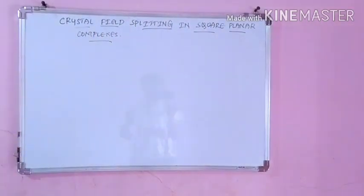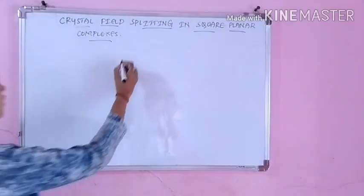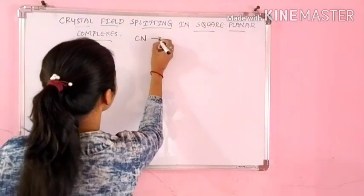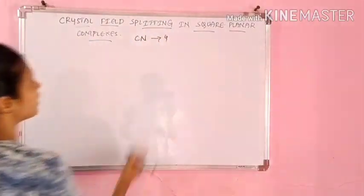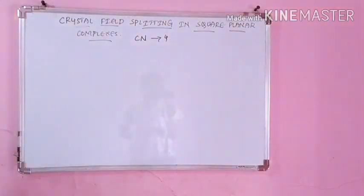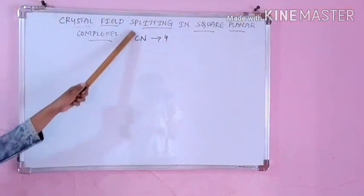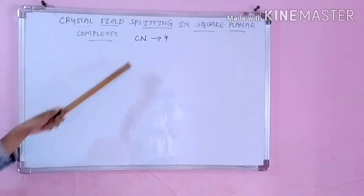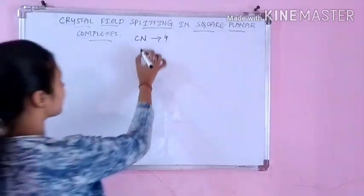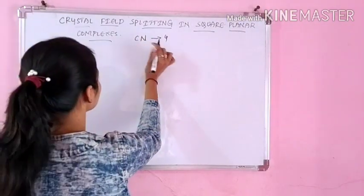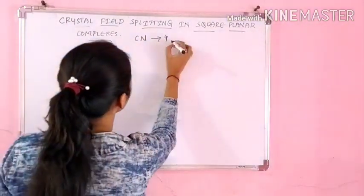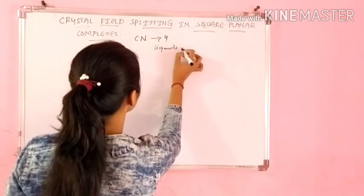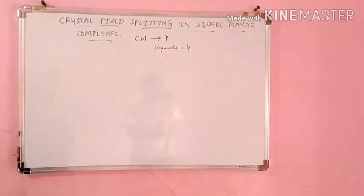Square planar complexes means your coordination number will be 4. So how many ligands will be there? The coordination number equals the number of ligands, so 4 ligands will be there. Ligand number is equal to 4.